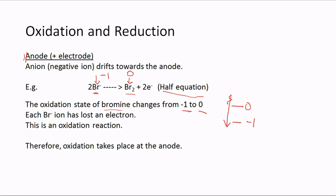Bromine moves from oxidation state −1 to 0, which is an increase in oxidation number — and that is called oxidation. Each Br⁻ ion has lost an electron, so this is an oxidation reaction; therefore oxidation takes place at the anode.